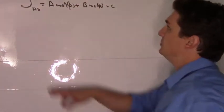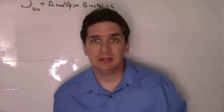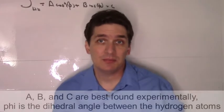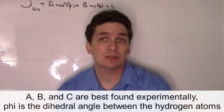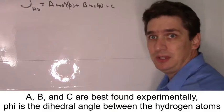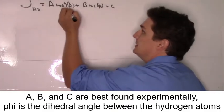These three terms are empirical, meaning you can't derive them from theory—it's more practical to measure them experimentally. A, B, and C are best found experimentally, and phi is the dihedral angle between the hydrogen atoms.